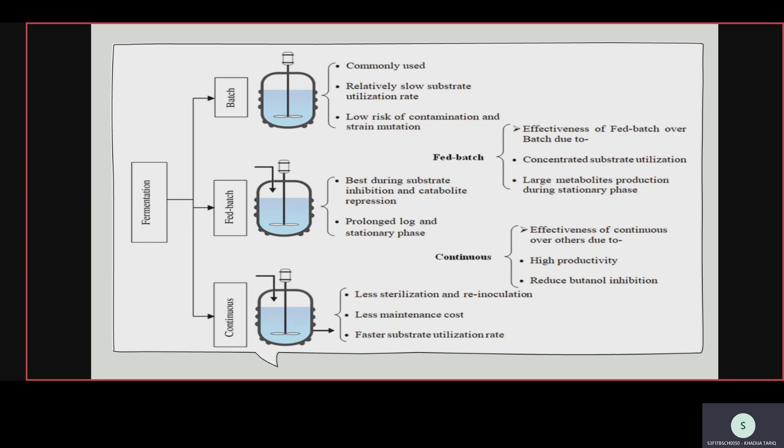Fed-batch is better than batch because of concentrated substrate utilization. Continuous is best because it has large metabolite production during the stationary phase — intracellular and extracellular metabolites are formed in large amounts in fed-batch. Continuous is best overall because it has high productivity and reduced inhibition. So continuous is best, fed-batch is better than batch, and the order is: continuous > fed-batch > batch.